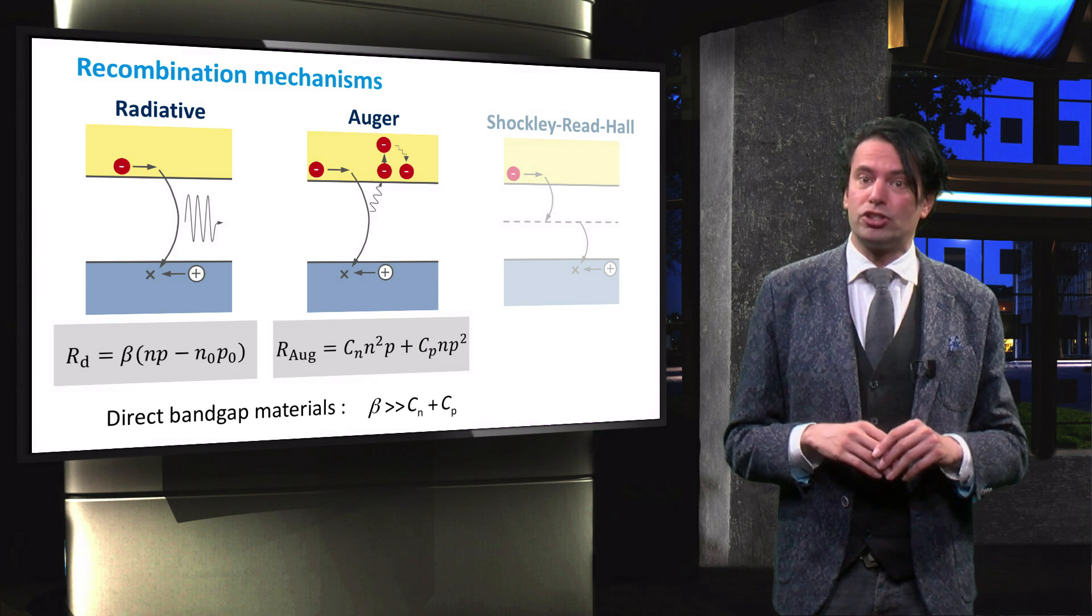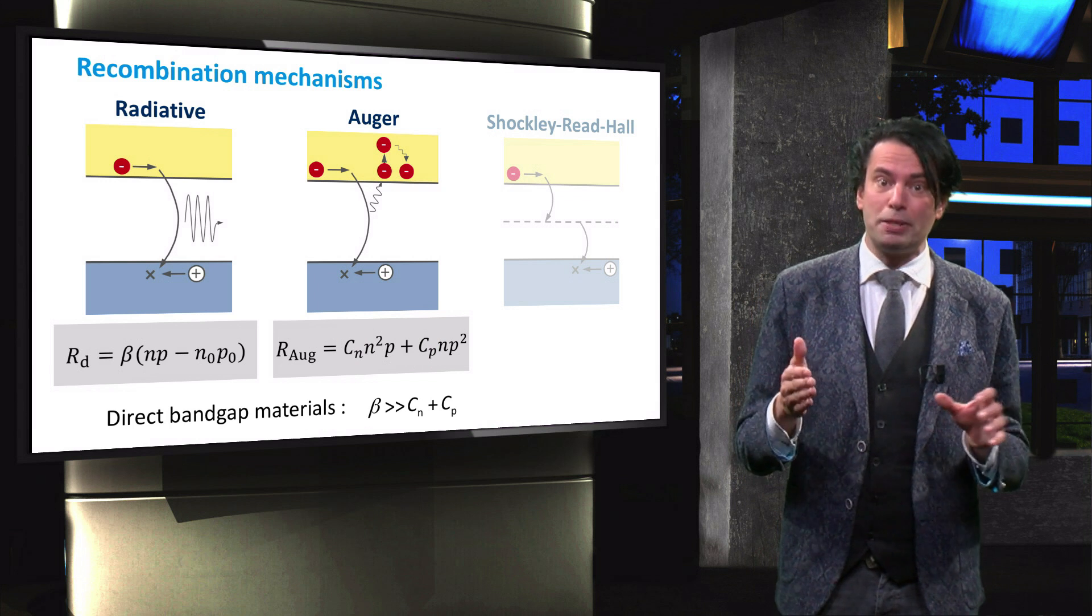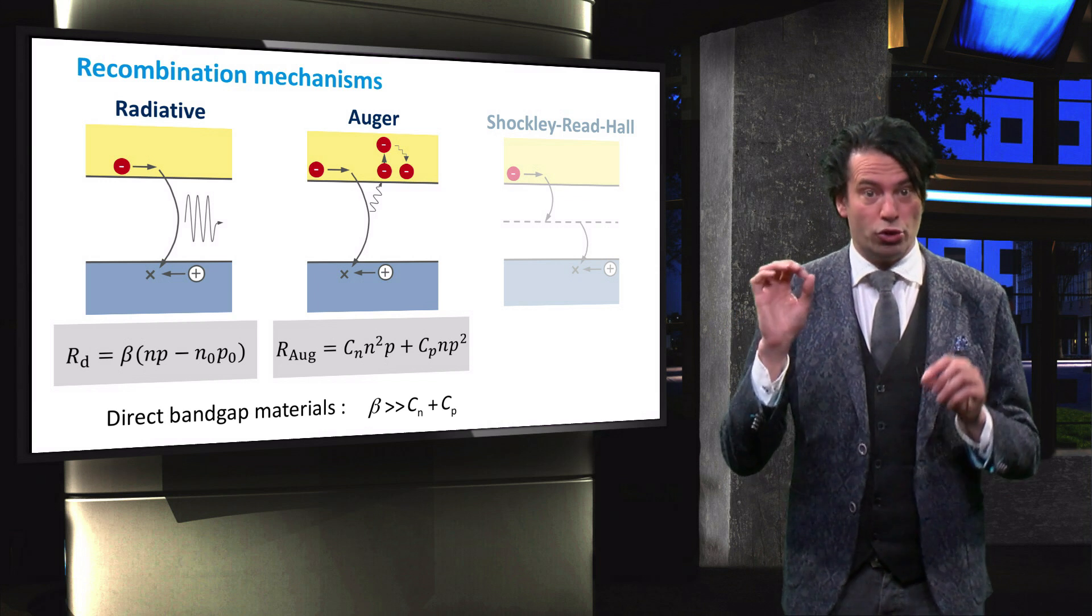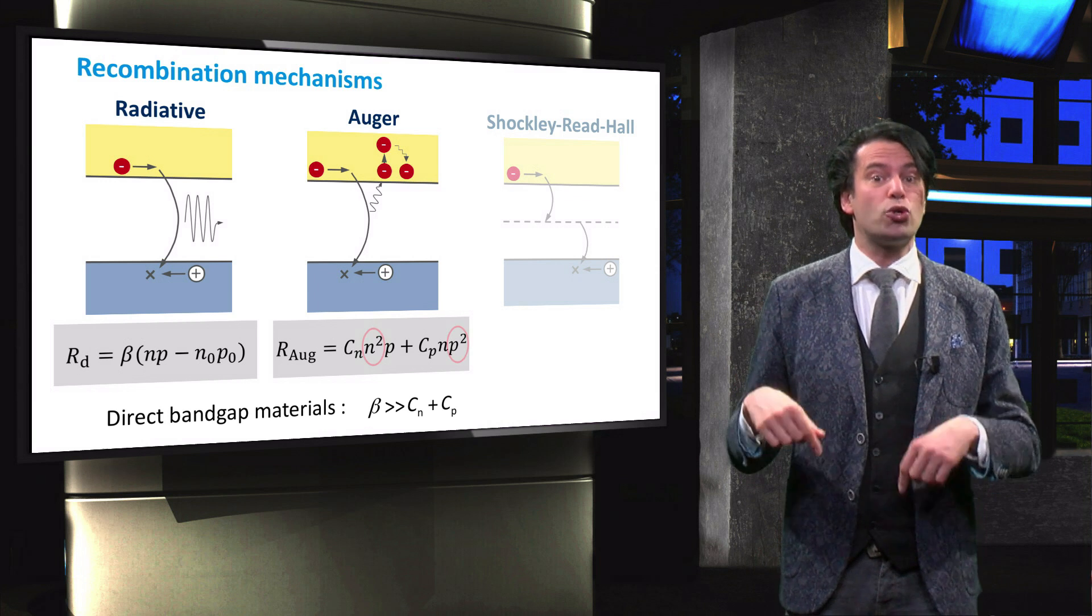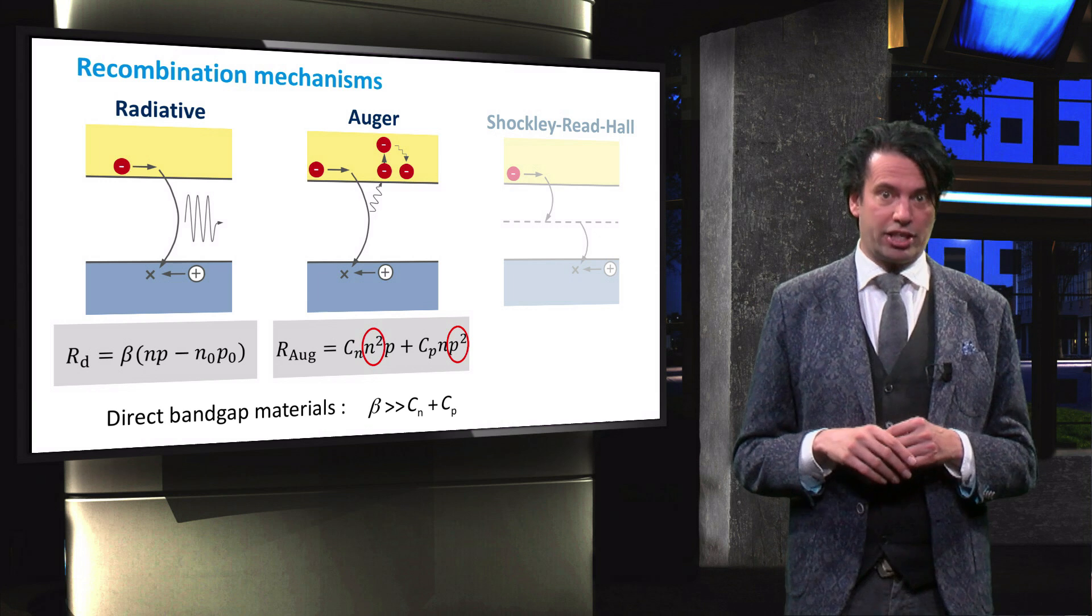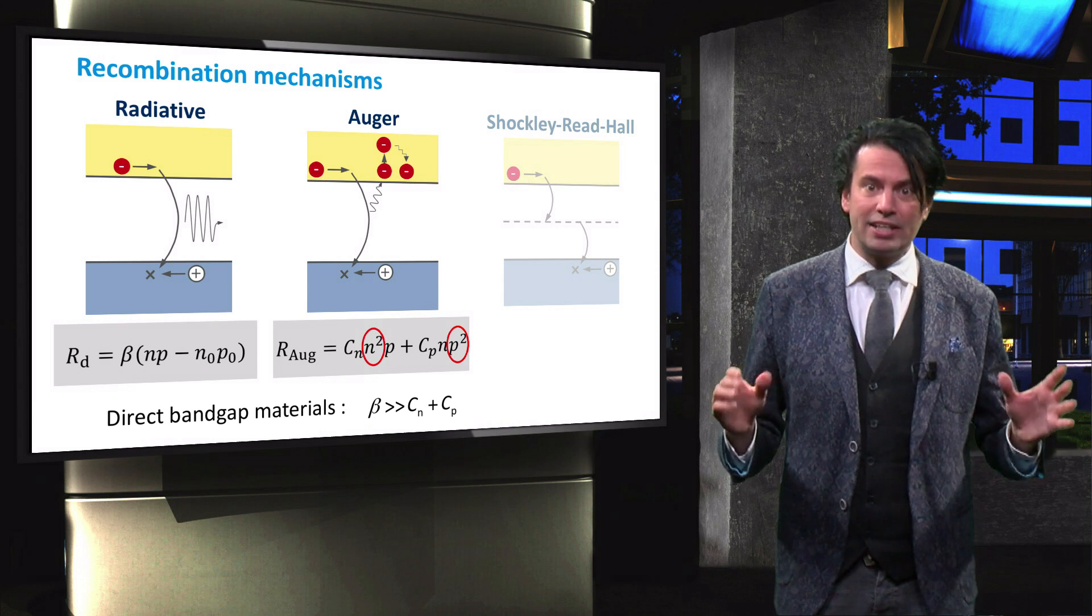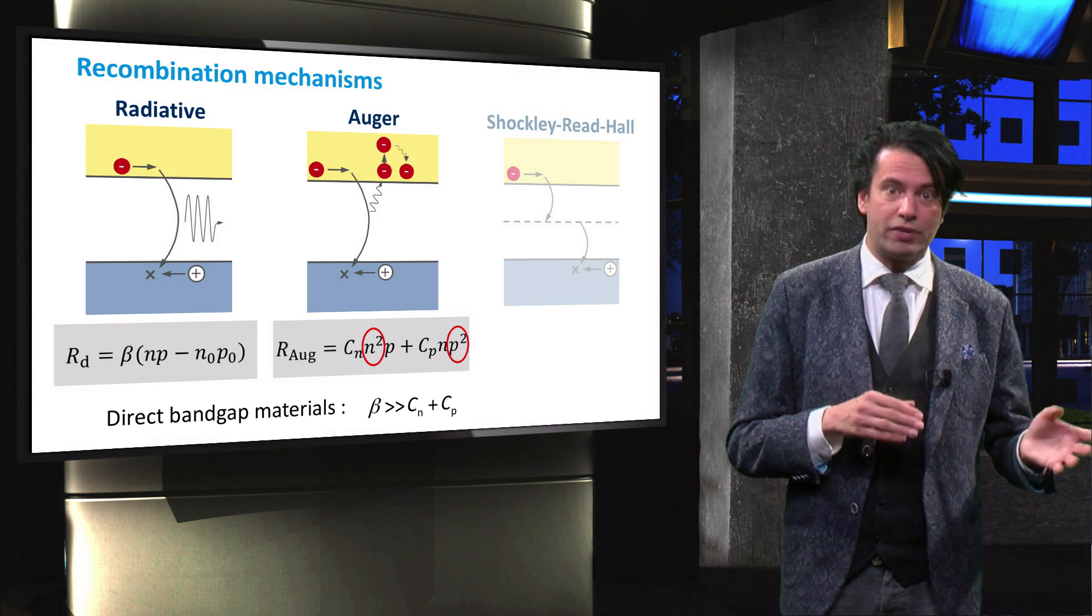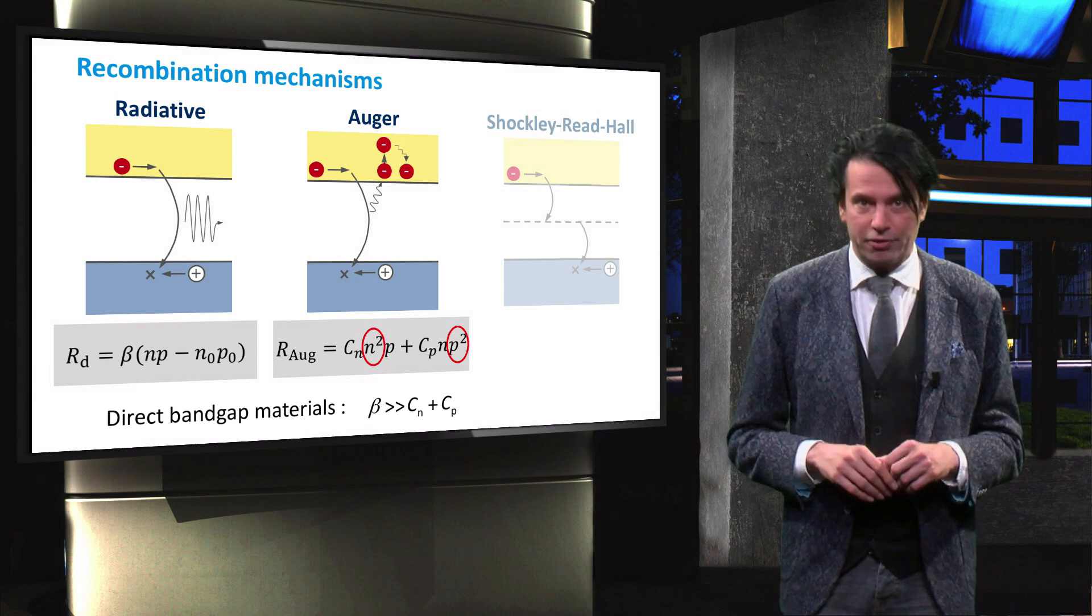However, as we can gather from these equations, the radiative recombination rate depends linearly on the electron and hole concentration. The Auger recombination rate has a quadratic relation with the carrier concentration. This means that the Auger recombination rate will increase more strongly than the radiative recombination rate with increasing carrier concentration.